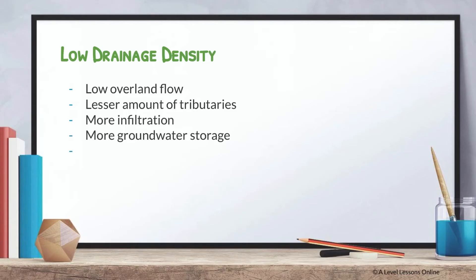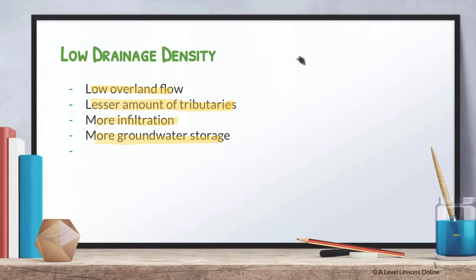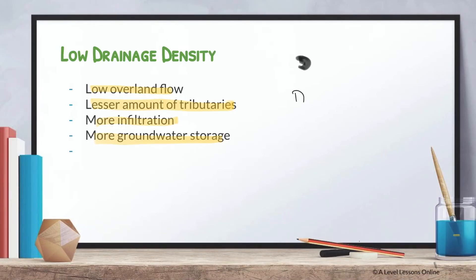On the other hand, lower drainage density is the complete opposite. There will be low overland flow, fewer tributaries, more infiltration, and more groundwater storage. In order to have a very low drainage density, you need a larger area and a shorter length. Using the formula — drainage density equals length over area — a lower value requires a smaller length and a larger area.